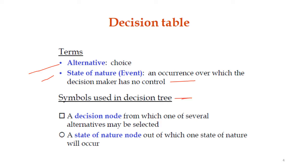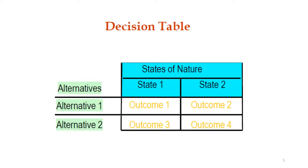The decision tree uses two symbols: a square and a circle. The square represents a decision node from which one of several alternatives may be selected. When we see a square, it represents a decision node from which several alternatives can be chosen. The circle represents the state of nature — an occurrence over which the decision maker has no control.